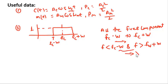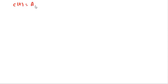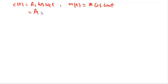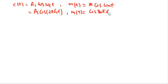In the question, you have c(t) equal to Ac·cos(ωc·t), which can be written as Ac·cos(2π·fc·t), and m(t) equal to cos(ωm·t), which can be written as Am·cos(2π·fm·t). This signal c(t) plus m(t) is the input to the non-linear device.